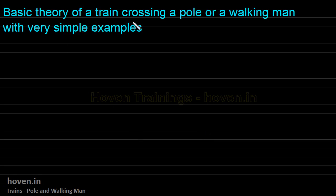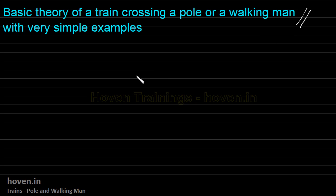We will discuss the basic theory of a train crossing a pole or a walking man with very simple examples. These things are fairly common and almost every aspirant knows these. But I will try to put them in a simple way so that anybody who doesn't have a good knowledge of mathematics can understand the basic concept behind this.